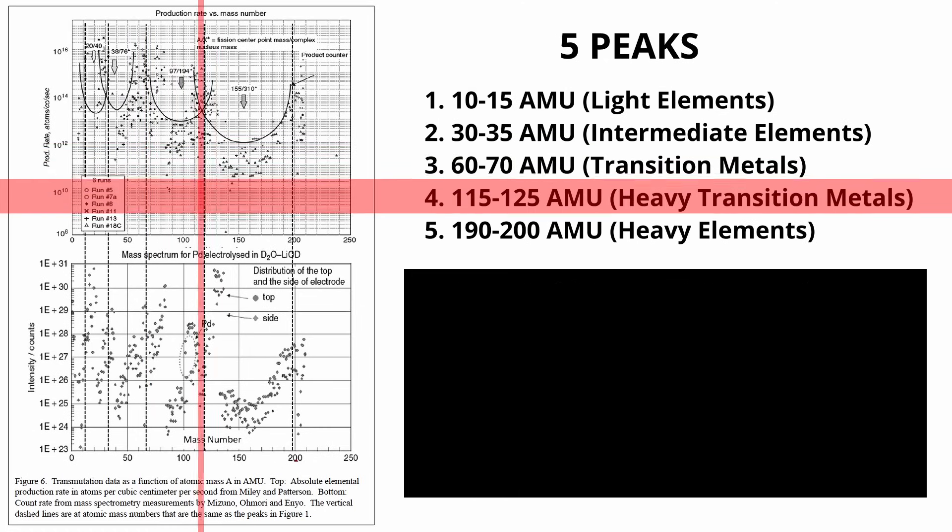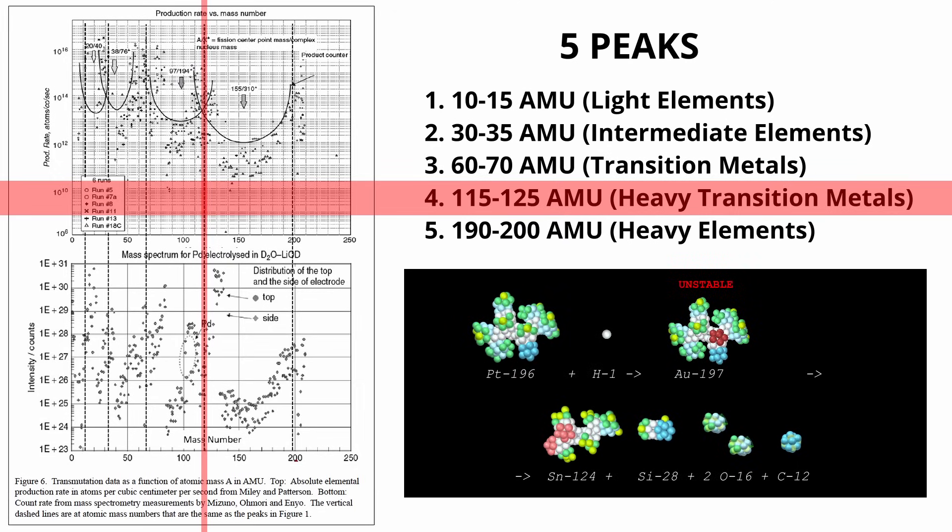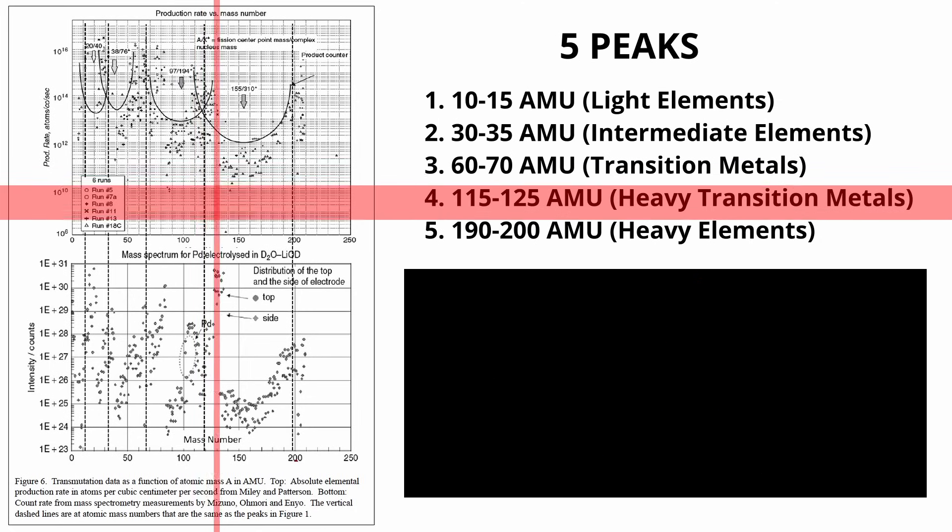The fourth peak: these products form from the fission of larger metals such as platinum which has undergone a stepwise isotopic change to an unstable configuration, often leaving tin or a similar element alongside smaller fragments.